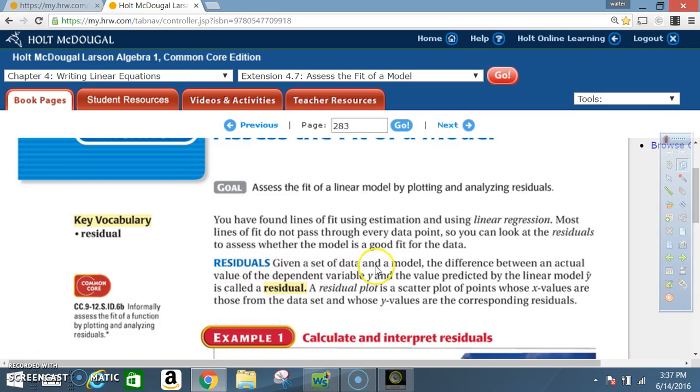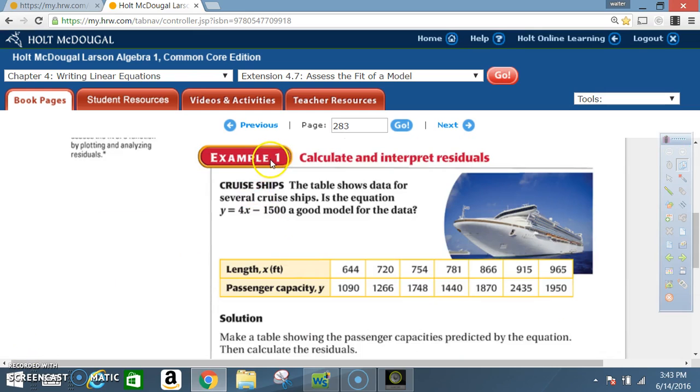Given a set of data and a model, the difference between an actual value of the dependent variable y and the value predicted by a linear model is called a residual. A residual plot is a scatter plot of points whose x values are those from the data set and whose y values are the corresponding residuals.